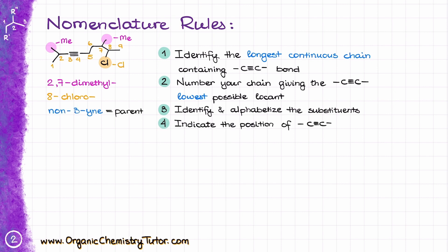Next, remember to indicate the position of the triple bond in our parent molecule. Here, the triple bond starts from the third atom, which means that our parent is going to be non-3-ine. And finally, we are going to put it all together, getting 8-chloro-2,7-dimethyl-non-3-ine.